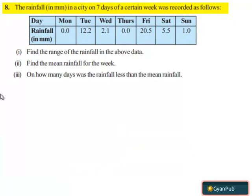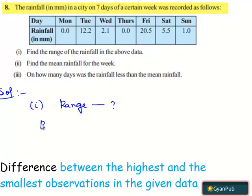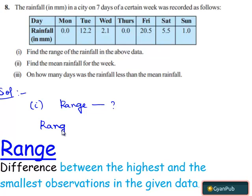Now let's move on to the solution. In the first part, they have asked us to find out the range. We can obtain range by subtracting the lowest observation from the highest observation. So range equals highest rainfall minus lowest rainfall.